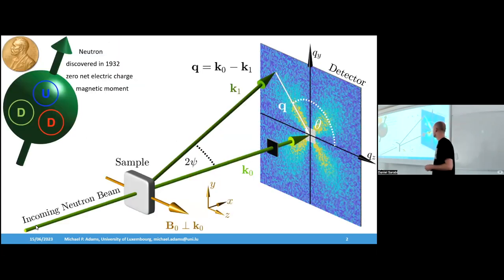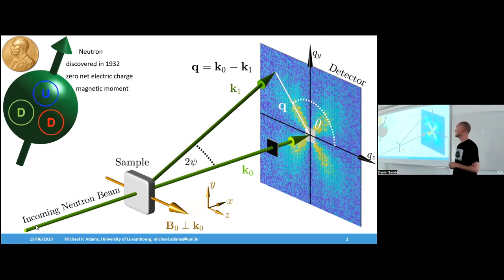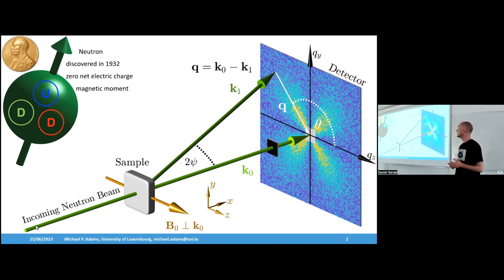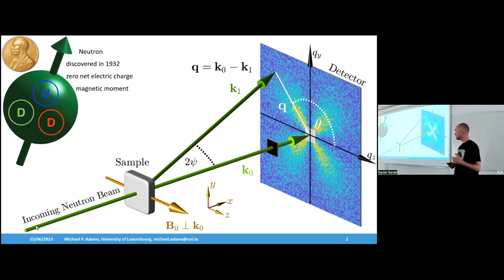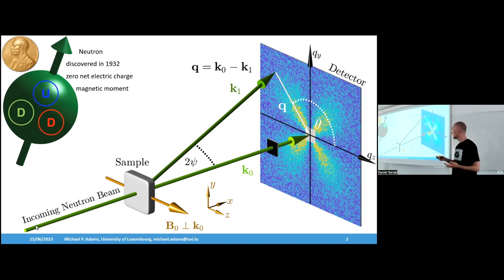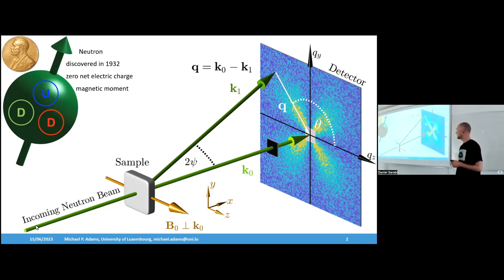Basically, why do we use neutrons for probing materials? The net electric charge of neutrons is zero, so neutrons can penetrate materials. And due to the magnetic moment of neutrons, when the neutron beam comes to a material, it interacts with the magnetic structure of that material, and the neutrons are scattered in several directions.